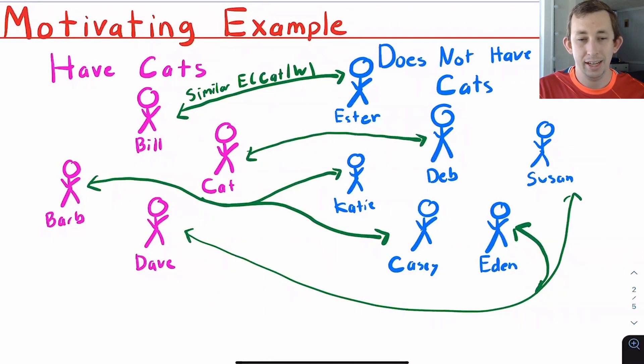In order to do that we need to find a counterfactual for each of those four people. We need to make our best guess as to what their stress level would have been had they not had a cat. We have a bunch of people who did not have a cat, like Esther, Deb, Susan, and their friends, and we're going to try and use them as a counterfactual for the treatment group.